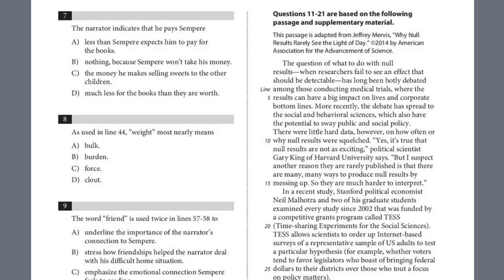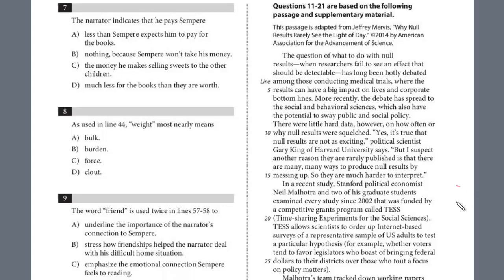In this lesson, we'll continue our view of Reading Test 8, Section 1. We are still on the second passage out of five, the social science passage. This is why null results rarely see the light of day. I assume you watched the previous video. We are on question number 16.